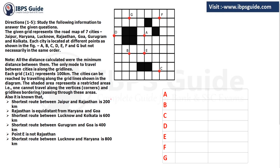Now, the shortest route between Jaipur and Rajasthan is 200 kilometers. We need to find which points are exactly 200 kilometers apart. A and E are 200 kilometers away — traveling from A across one grid and up gives 100 plus 100 = 200. B to E is also 200 kilometers. There are no other point pairs we can use for this distance.